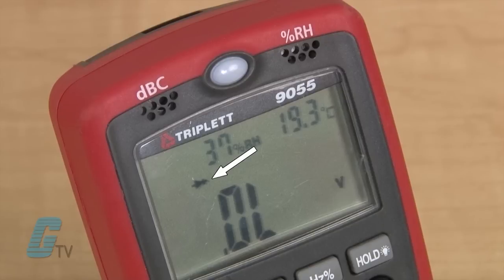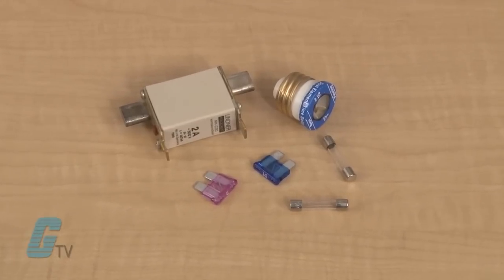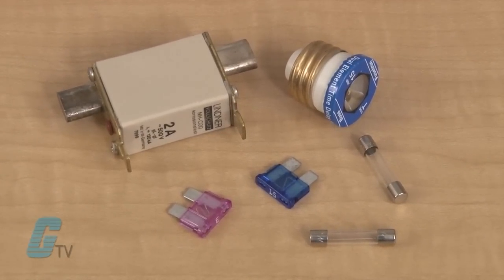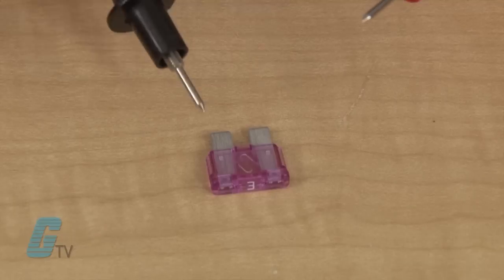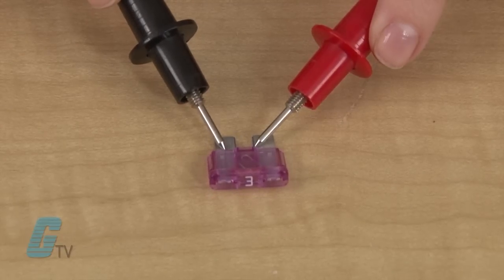The diode check function can also be used by repeating the same steps as done for resistance. Different fuses have different connection points to test from. An automotive fuse, shaped like this, has the connection point here and here.